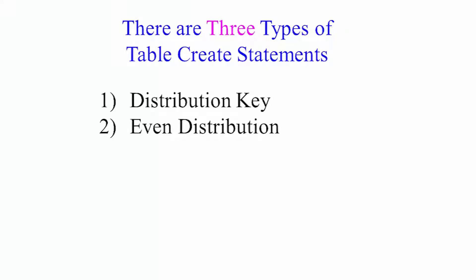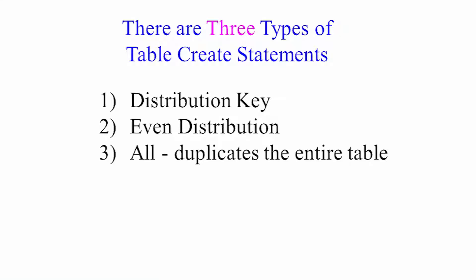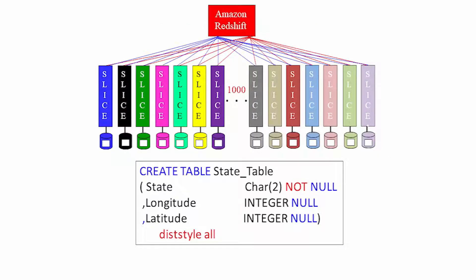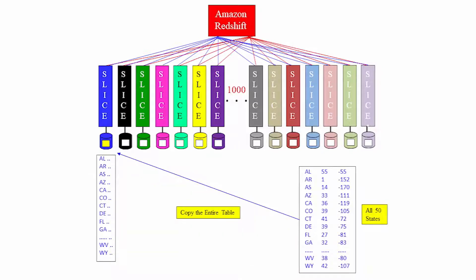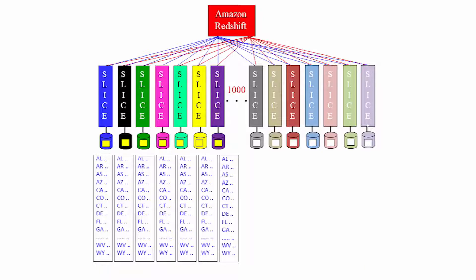And finally, you will have a distribution style of all. I want you to think about what that really means. Let's say you had a state table with 50 states — what that would mean is they would take all 50 states, that entire table, and they would put it on each and every slice.